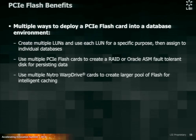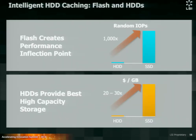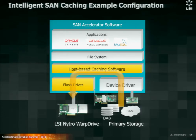You can also use multiple Nitro Warp Drives to create a larger pool of Flash for intelligent caching. For intelligent hard disk caching, we use a Flash device as the cache device, which is very cheap to generate a large amount of IOPS and megabytes per second, whereas a hard disk is very expensive at providing a large amount of IOPS but very cheap at capacity. For intelligent SAN caching, we use the LSI Nitro Warp Drive as the cache device. Host-based software looks at all the data activity on that LUN, determines if that data is hot, and if so, copies that data to the cache device. Any subsequent read will be read from the cache device.